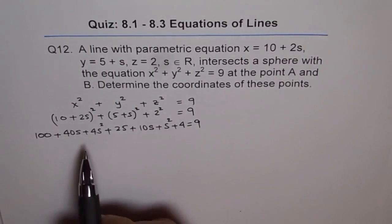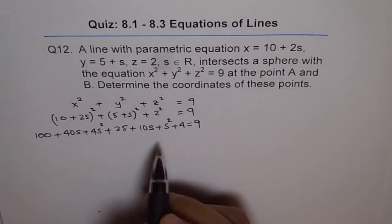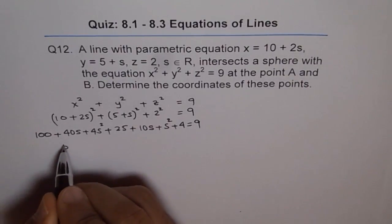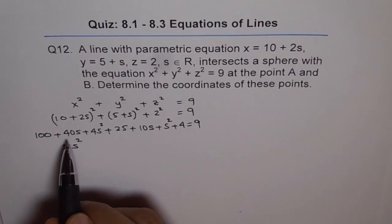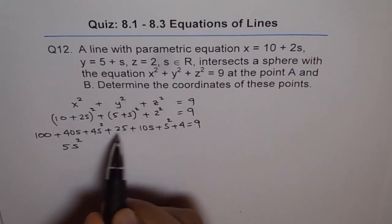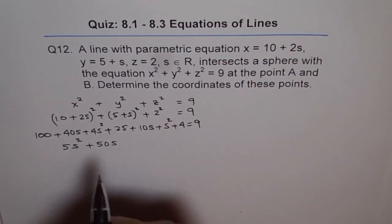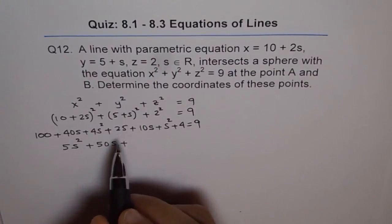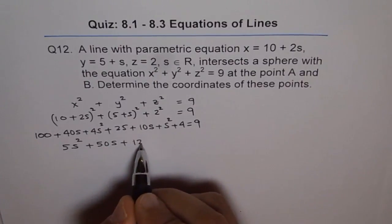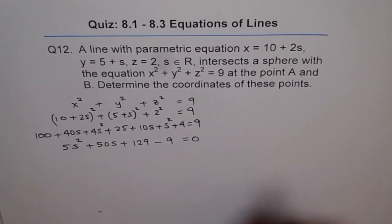Now let's combine the like terms. We got 4s square and s square is 5s square. About the s terms, you've got 10, 40 and 10 which is 50, 50s, and the numbers 100, 125, 129. We can bring 9 this side, minus 9 equals 0.